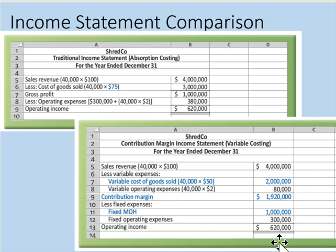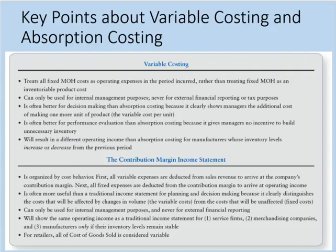GAAP does not allow companies to use the contribution margin format for external reporting purposes, but managers find contribution margin income statements more helpful than traditional income statements for planning and decision-making. Later in the course we will spend significant time preparing contribution margin income statements during our CVP — cost volume profit — analysis.